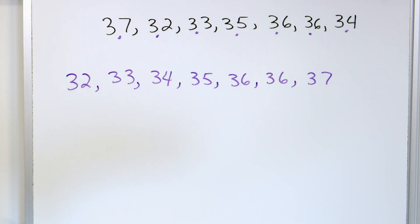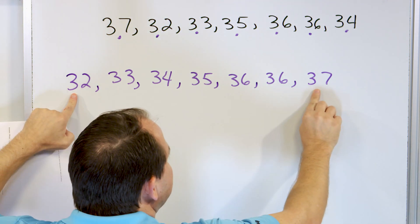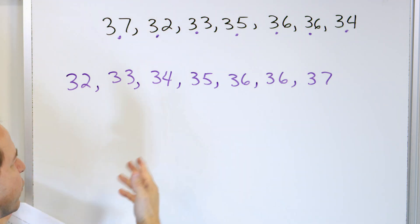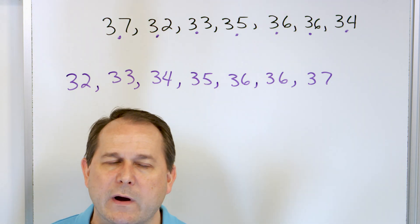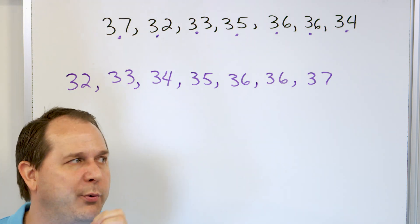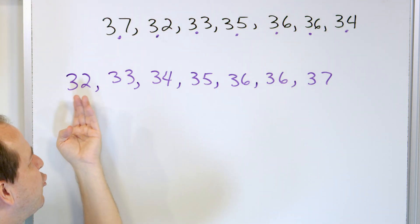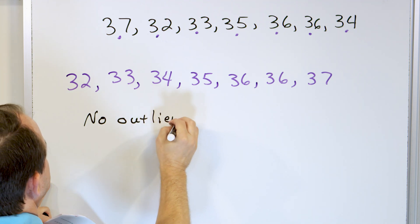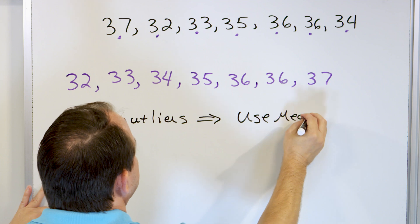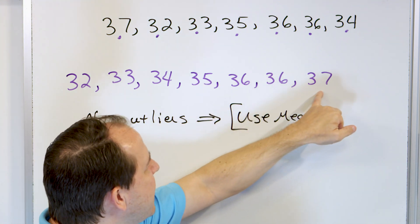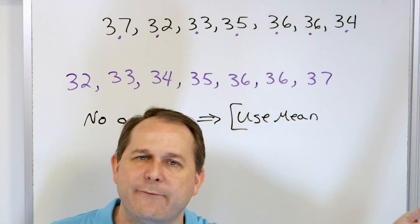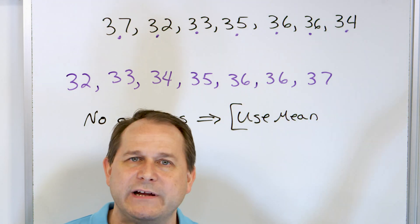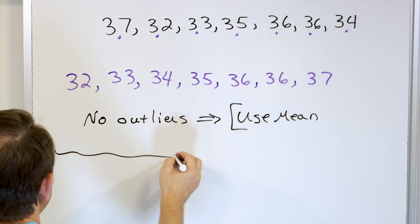Next, ask yourself: is there an outlier or not? Well, the range of this data only goes from 32 to 37. If we were studying the age at which people get married, and the range of ages only goes from 32 to 37, I don't think there's a real outlier here. All of these numbers are generally around the same area. Outliers are when you have one or two points far away from the bulk of your data. This is a nice gradual range from 32 to 37 — no outliers. So because there are no outliers, we're going to use the mean.